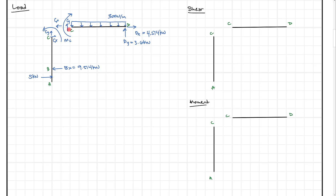You'll notice these forces are equal and opposite: CY goes up on one side and CY goes down on the other, CX goes to the right on one side and to the left on the other, and the moment is clockwise on the right and counterclockwise on the left — equal and opposite forces.